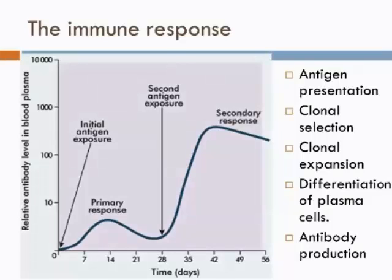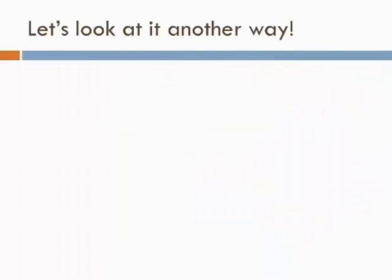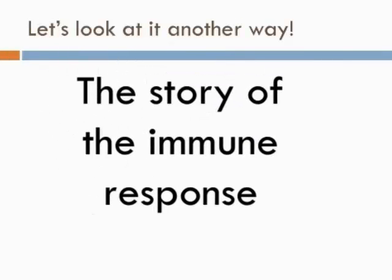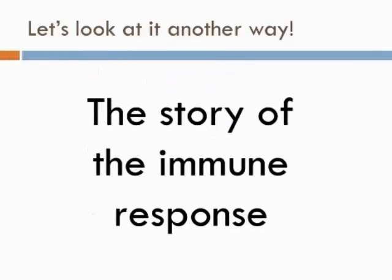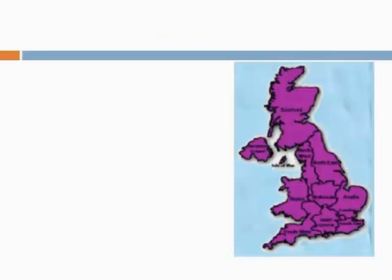We've talked in detail about the roles of the different cells and what they are doing within the immune response. But I do think it's really easy to think of it in a bit of a different way. We're now going to talk about the story of the immune response. So here we are, starting off with our country — the body.